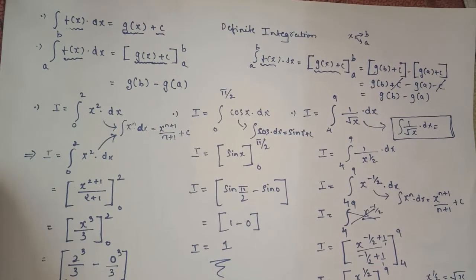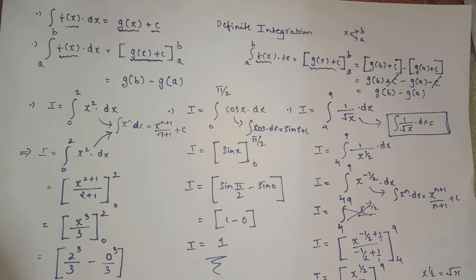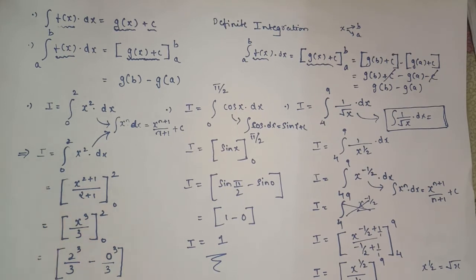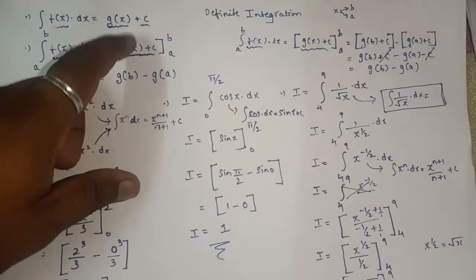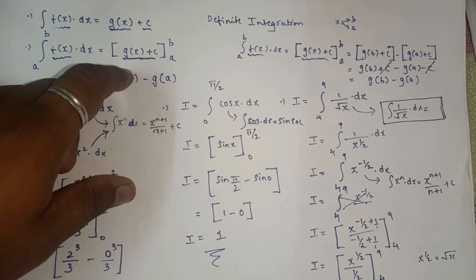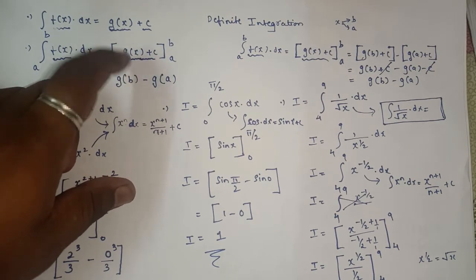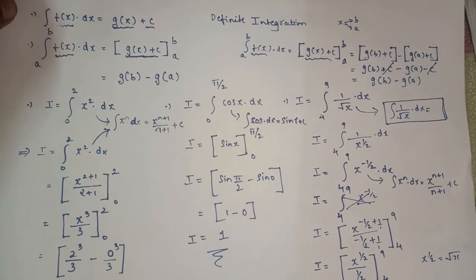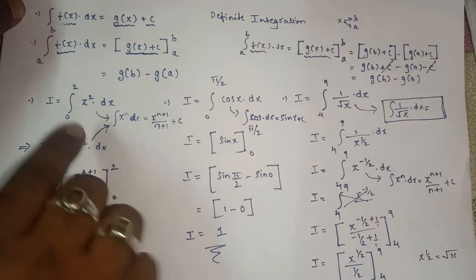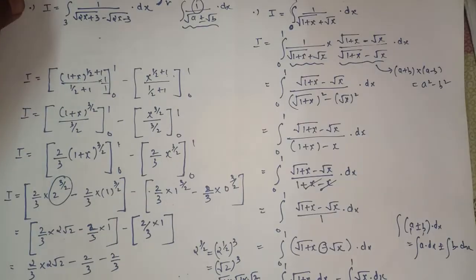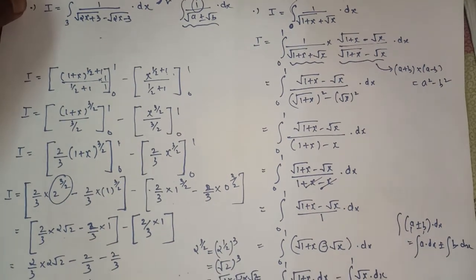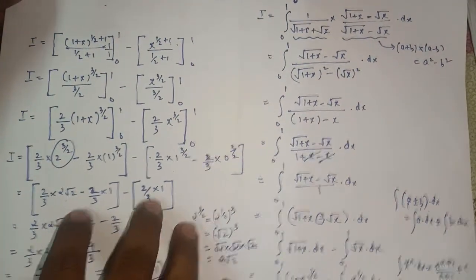Hello students. As in the last lecture, we started with the chapter called definite integral — that is definite integration. As I told, it is the extent part of your integration chapter, and if you are perfect with all the concepts and all the types of integration, then this chapter will be very easy for you to understand. In the last lecture, we saw some basic examples based on the standard formula, then cosine, then one sum based on rationalization, and then how to integrate and find the final answer.